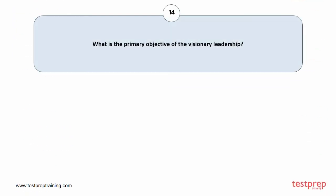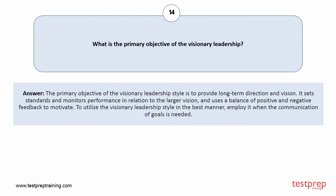Question number 14: What is the primary objective of visionary leadership? Your answer is: The primary objective of the visionary leadership style is to provide long-term direction and vision. It sets standards and monitors performance in relation to the larger vision, and uses a balance of positive and negative feedback to motivate. To utilize the visionary leadership style in the best manner, employ it when the communication of goals is needed.